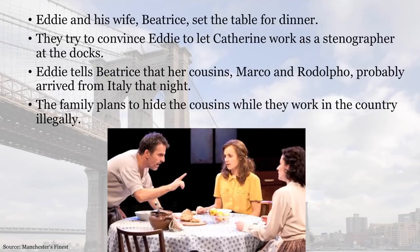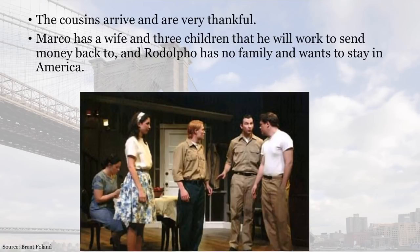Eddie and his wife Beatrice then set the table for dinner, and they both try to convince Eddie to let Catherine work as a stenographer at the docks. Eddie tells Beatrice that her cousins Marco and Rodolfo have probably arrived from Italy that night, and we learn that the family plans to hide the cousins whilst they work in the country illegally. The cousins arrive and are both very thankful. We learn that Marco has a wife and three children, and he will work very hard to send money back to them.